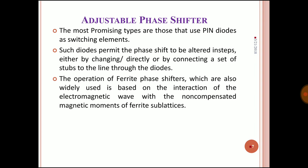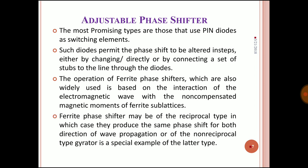The operation of ferrite phase shifters, which are also widely used, is based on the interaction of an electromagnetic wave with the non-compensated magnetic movement of ferrite sublattices. Ferrite phase shifters may be of reciprocal type, in which they produce the same phase shift for both directions of wave propagation, or of non-reciprocal type — a gyrator is a special example of the lattice type.